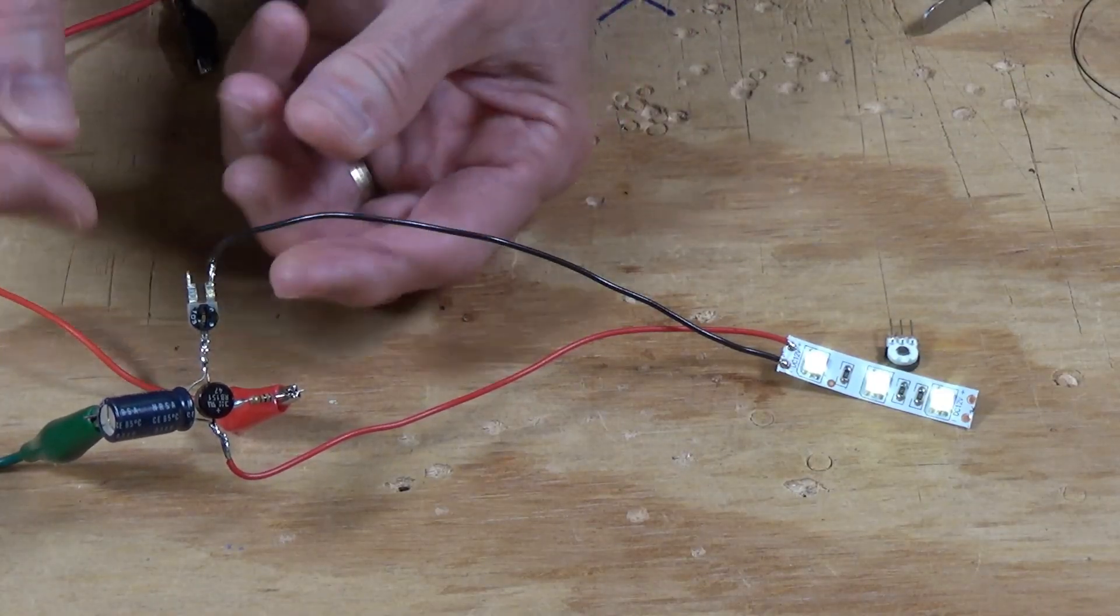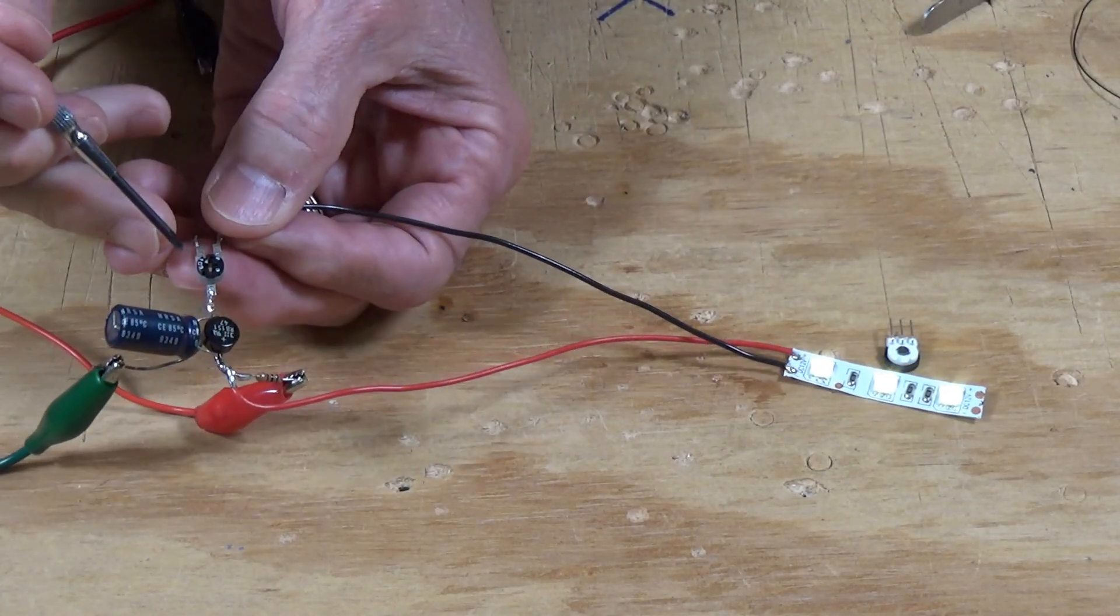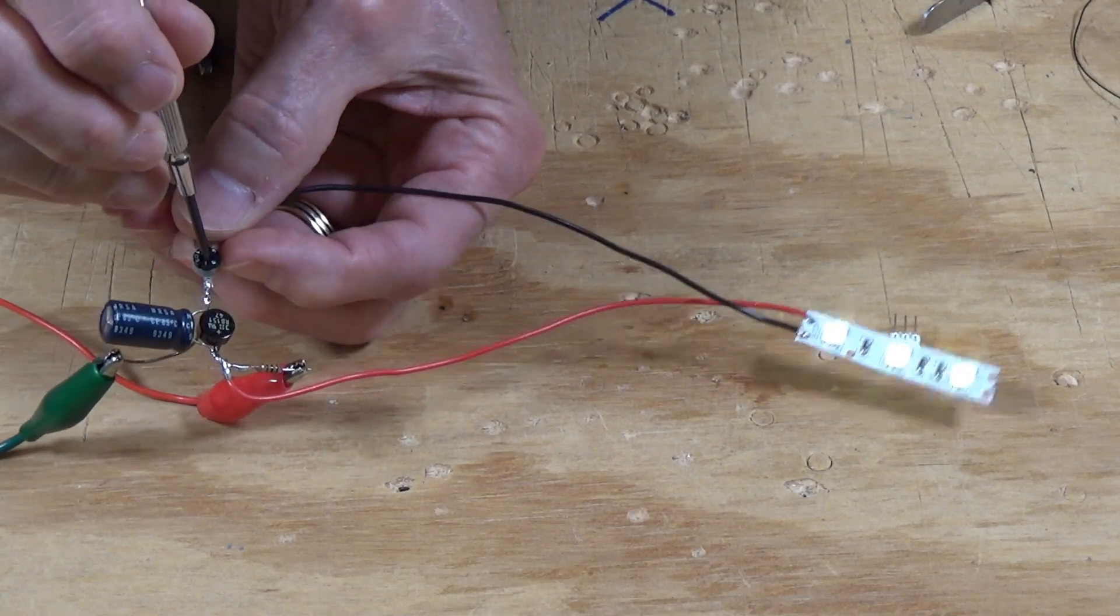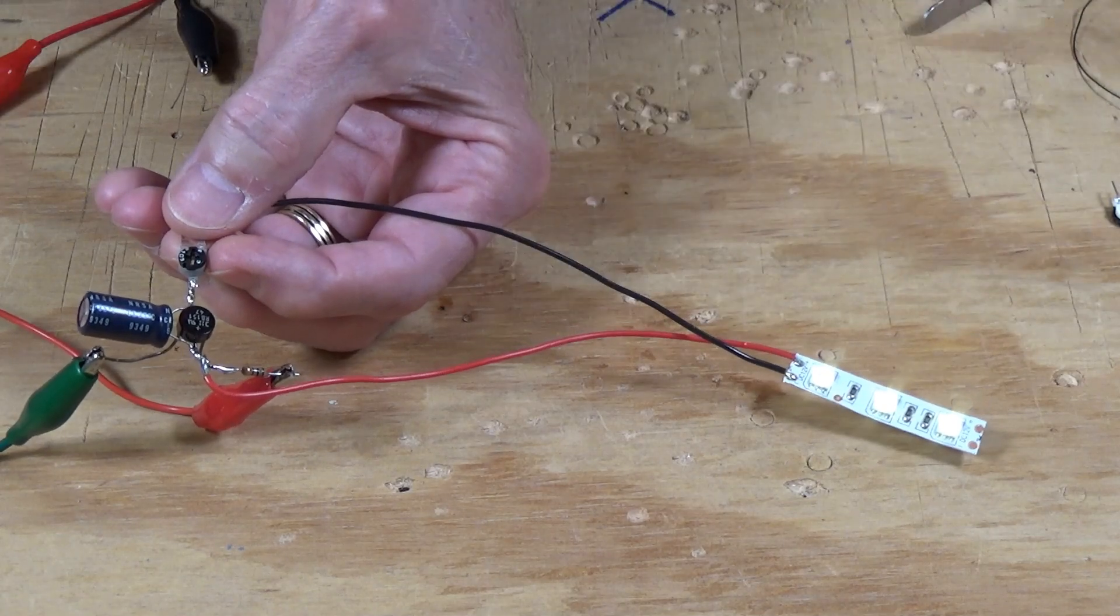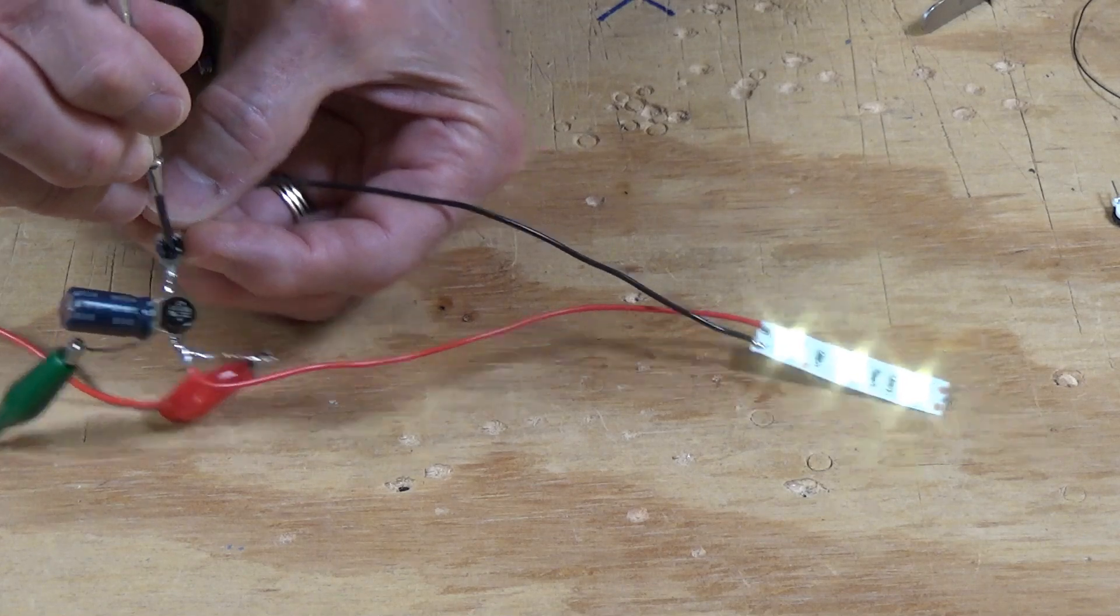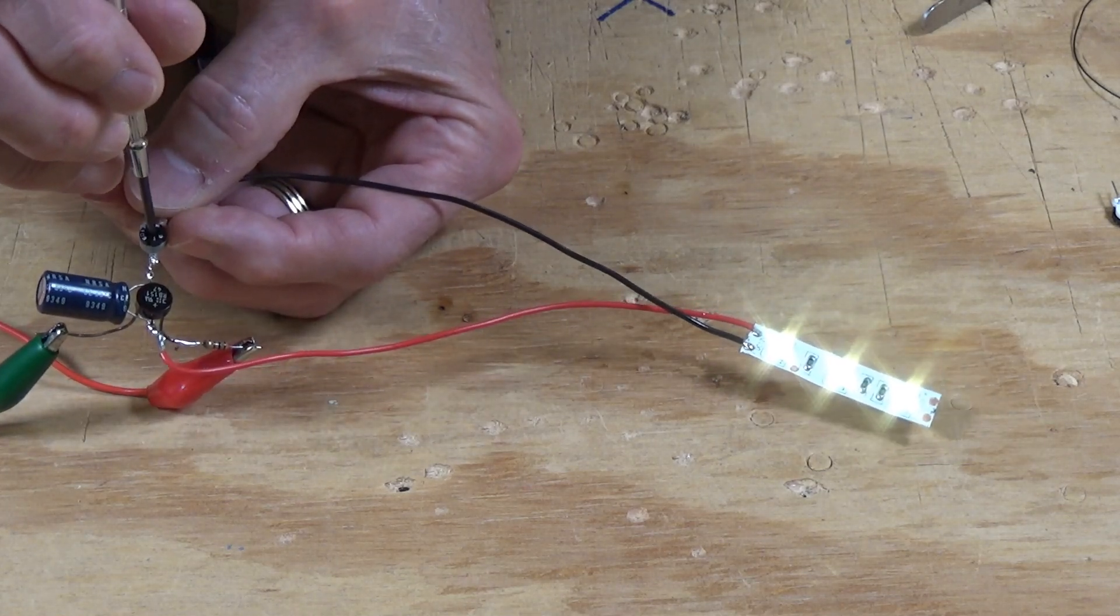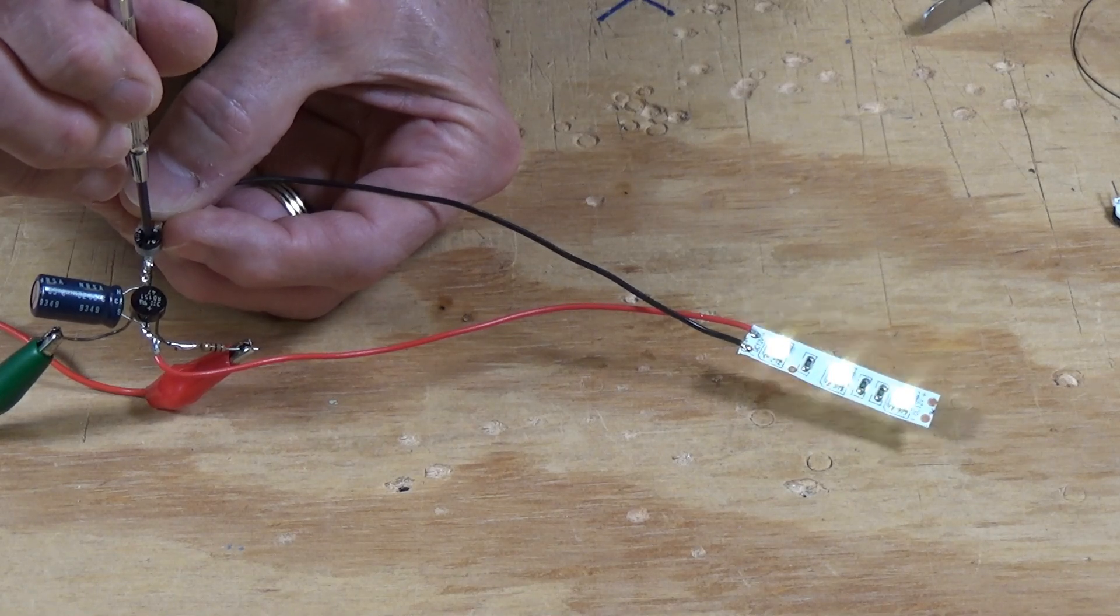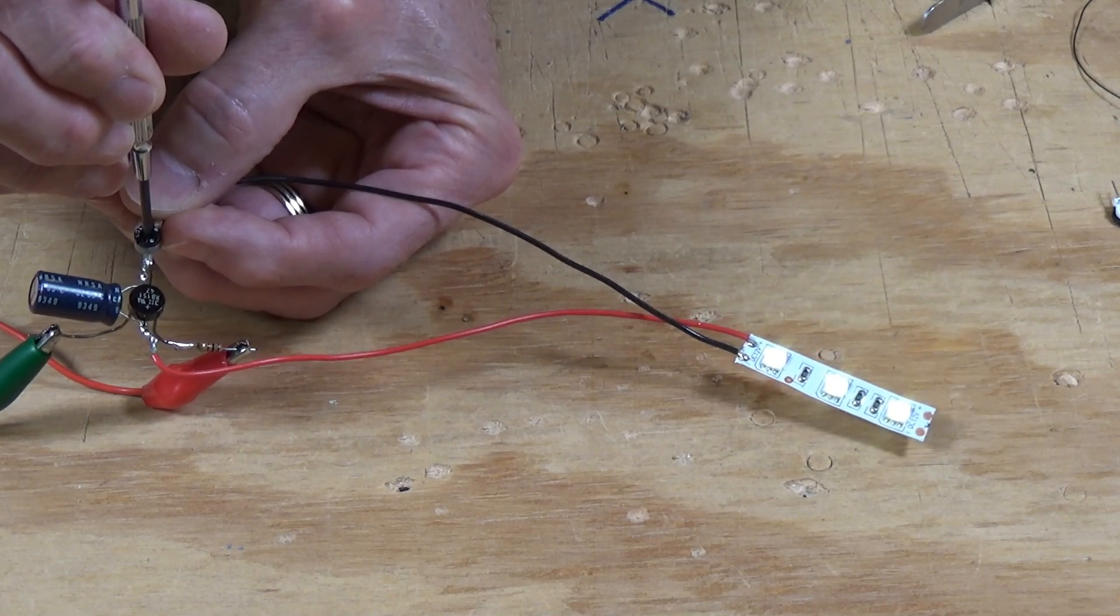Now, as I said, I put this little trim pot on here so I could adjust the voltage going to this lighting fixture. Now, you can see it's very, very bright now. So I'm going to start turning that down. I'm going to increase the resistance.